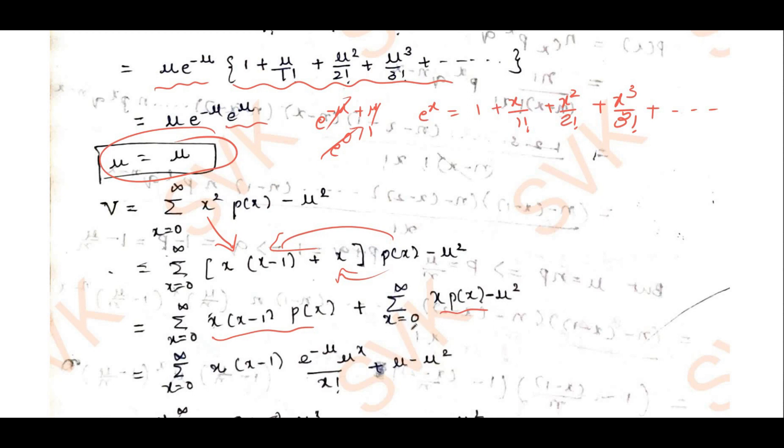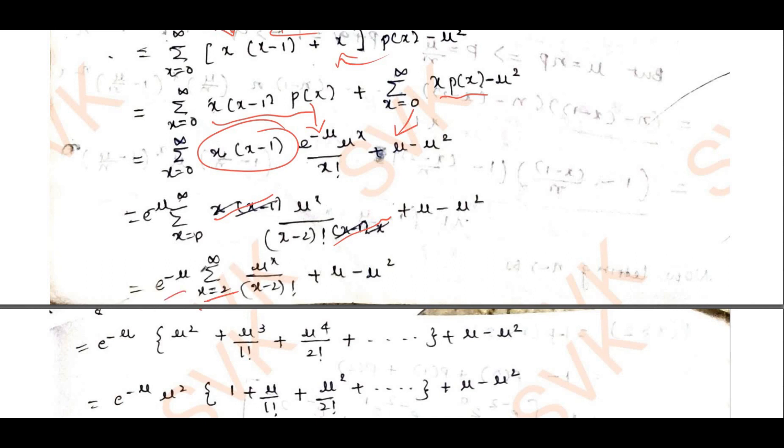Substituting the definition of P(x) as e to the power minus mu into mu to the power x divided by x factorial, we have x(x minus 1) in the numerator and x factorial in the denominator. Rewriting x factorial as x(x minus 1) into (x minus 2) factorial, the x(x minus 1) terms cancel. We are left with e to the power minus mu into summation from x equal to 2 to infinity of mu to the power x divided by (x minus 2) factorial, plus mu minus mu squared. Note: starting from x equal to 2 because (x minus 2) factorial is undefined for x equal to 0 or 1. e to the power minus mu is constant and taken outside.